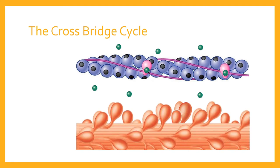Now the binding sites have been made available for the myosin heads to reach up, bind to the binding sites, and move the actin filament. The point is: without calcium ions flooding into the sarcoplasm, there could be no cross-bridge cycle. Without calcium binding on the troponin, the tropomyosin would remain covering the binding sites, prohibiting the myosin heads from binding and producing movement.